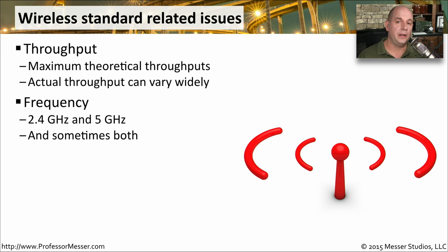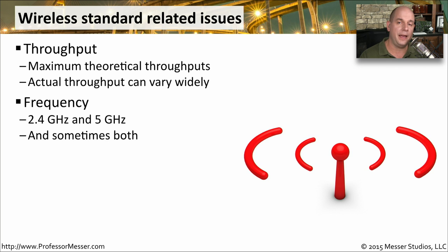You should also think about what frequencies are in use in your environment and which ones would be best. Although we think of 5 GHz as being the best frequency to use, in your particular environment you might want 2.4 GHz because it might go through walls better. Or you might be using both 2.4 GHz and 5 GHz, depending on what devices you have and where they might be located.